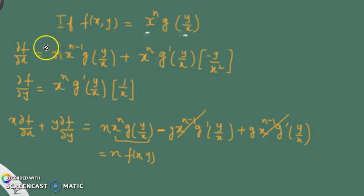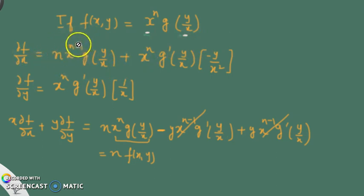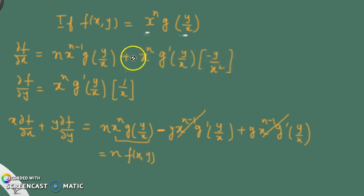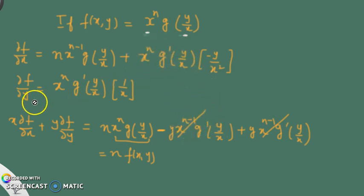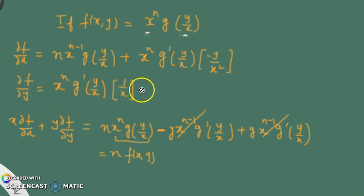To establish the result, the left-hand side is x times f_x plus y times f_y. Multiplying the first equation by x: x times nx^(n-1) becomes nx^n, and the second term with x squared in the denominator simplifies, with one x cancelling to give x^(n-1) g'. When y times the partial derivative with respect to y is added, opposite signs cancel and we obtain the result n times f.